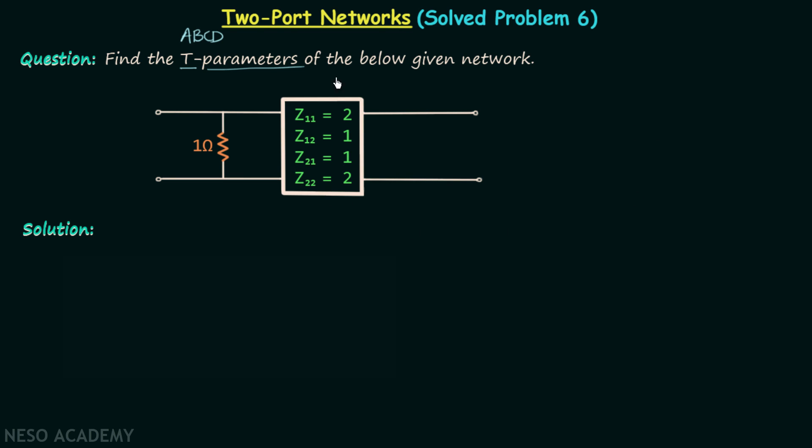You can see that we have one two port network having the Z-parameters 2, 1, 1, 2, and one 1-ohm resistor is connected between terminal 1 and terminal 2 of port number 1 of this two port network. In this way we are getting our larger two port network. When you observe carefully, you will find parameters Z12 and parameters Z21 both are equal to 1. This means parameter Z12 is equal to parameter Z21.